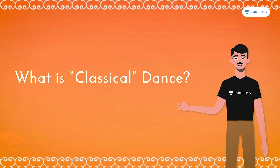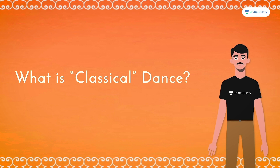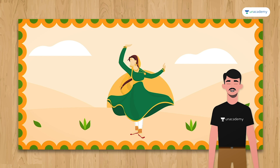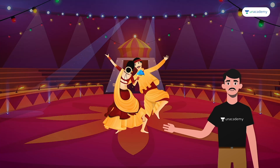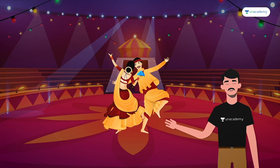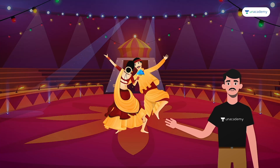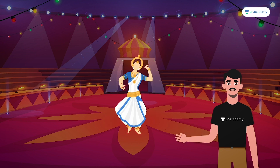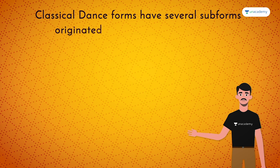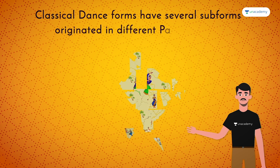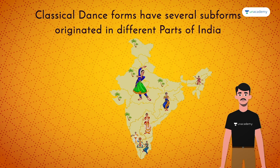A classical dance form is characterized by grace and precision of movement and by elaborate formal gestures, steps and poses. Classical dance forms have several sub-forms originated in different parts of India.